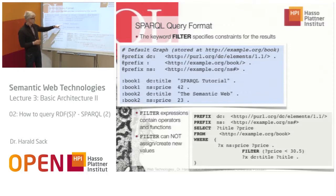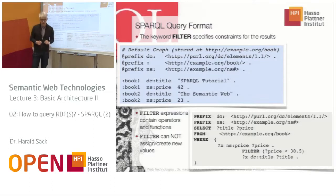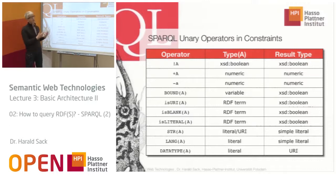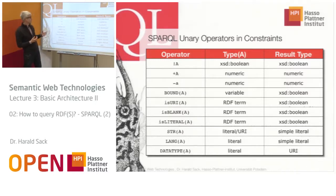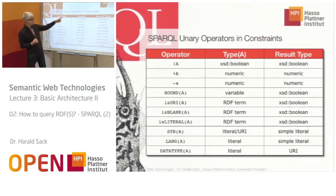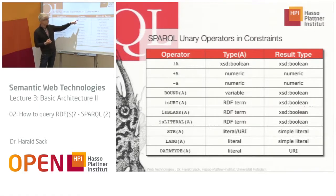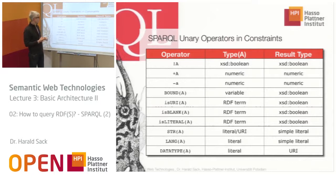For filter conditions, you have several operators. You have binary operators and unary operators. For example, the exclamation mark defines a negation — a Boolean operator result can be negated with it. You also have plus and minus, which can be applied to numeric values and interpreted as positive or negative signs.